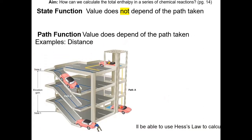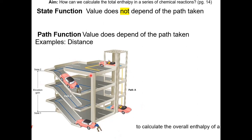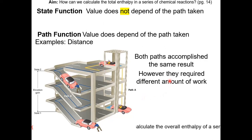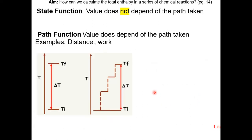In this example, we have two paths. Either you take the elevator to go from the bottom floor to the top floor, or in the other path, you can push the car up three floors to the top floor. Both paths accomplish the same result, which is moving your car from the bottom floor to the top floor. However, they require a different amount of work. Therefore, work is considered a path function.